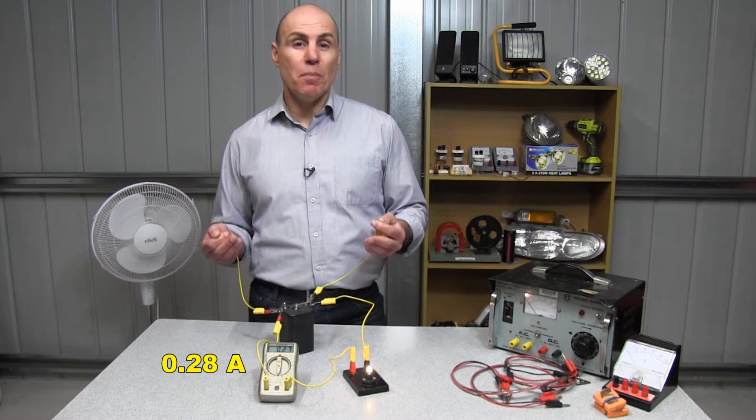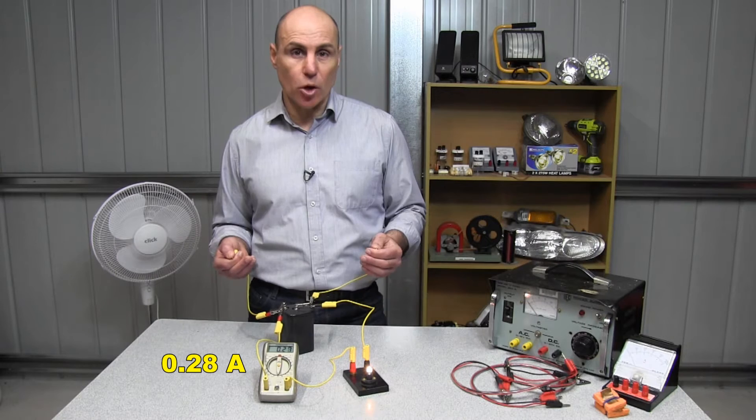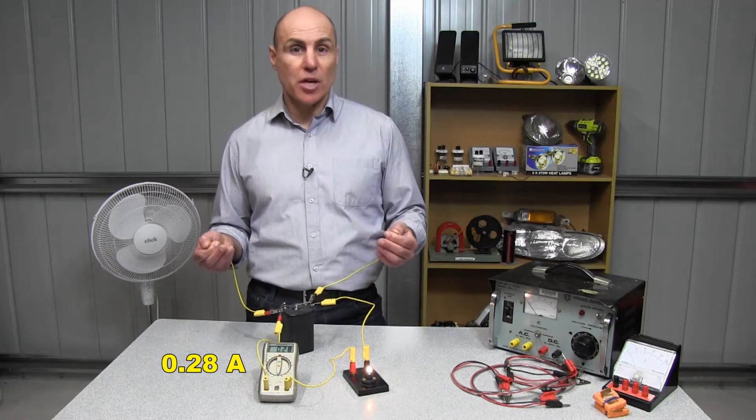It's because my body has a much higher resistance than this light globe, and a six volt battery can't push all that much current through me.